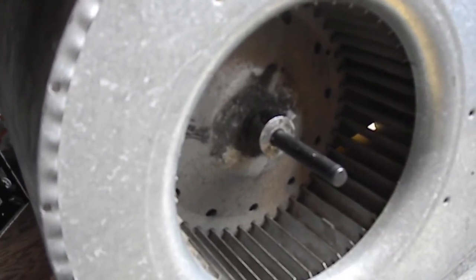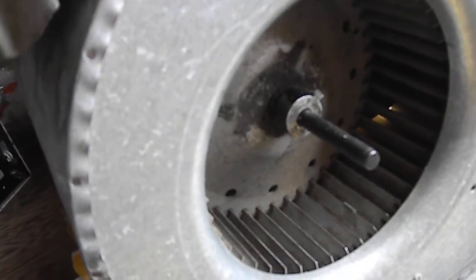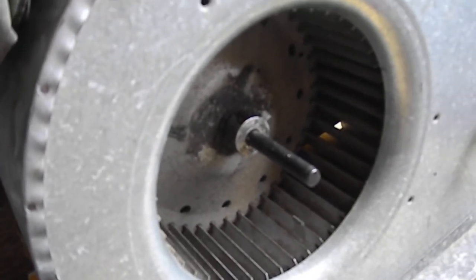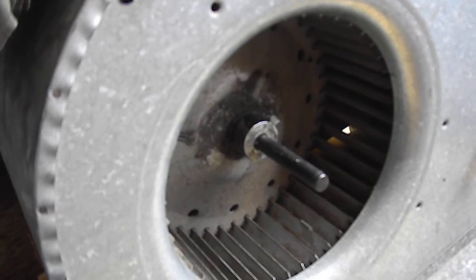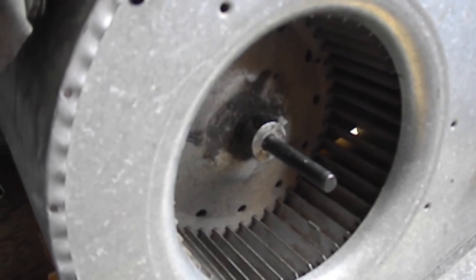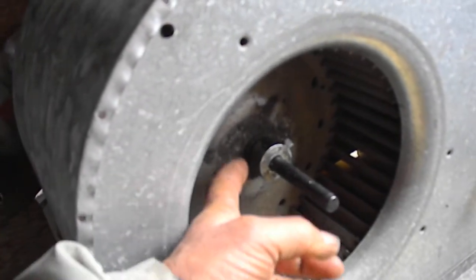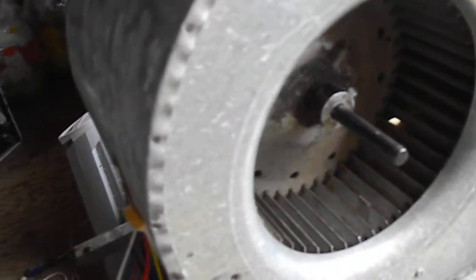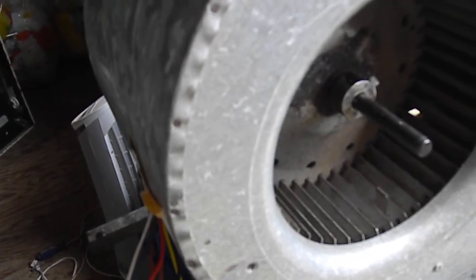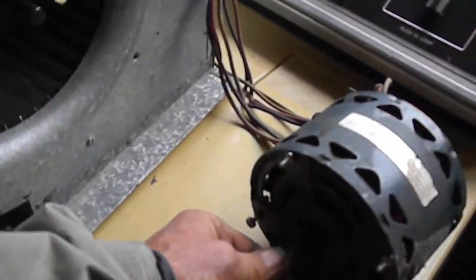I soaked it with some PB Blaster penetrant to get in there and loosen it up, and then I heated it up with a torch—a little Bernzomatic torch—around the edge to pull it out. I finally got it out. I tried pounding on the shaft at first to get it out a little bit.